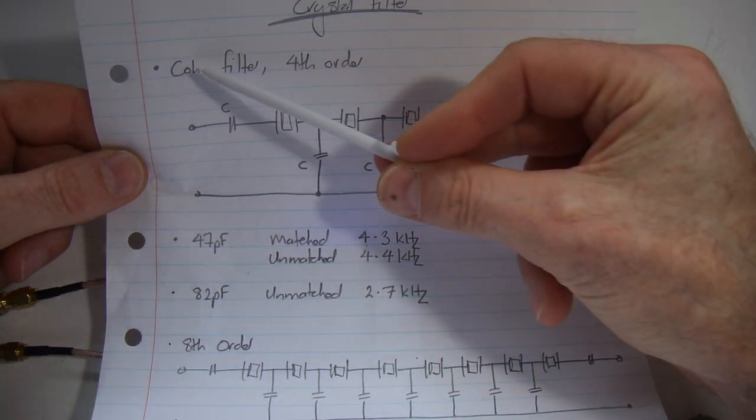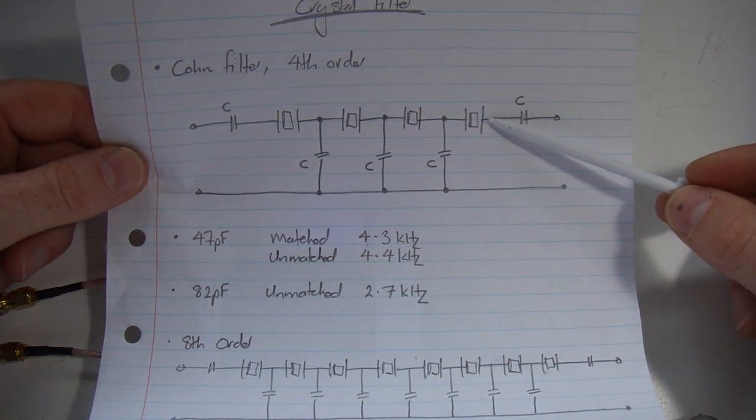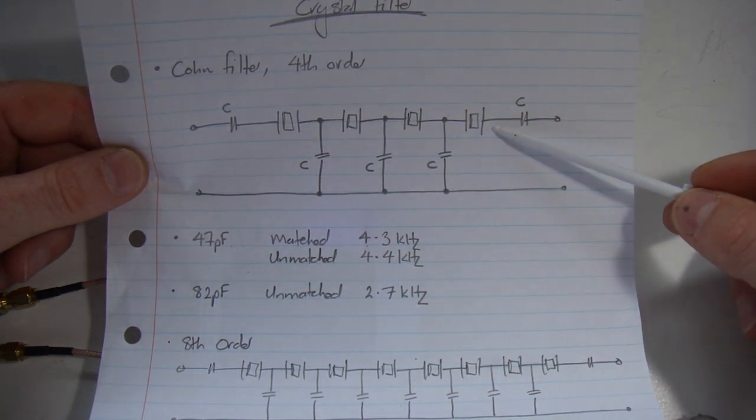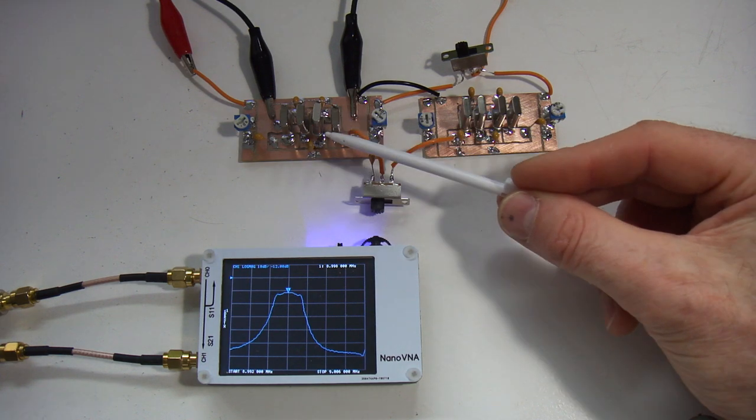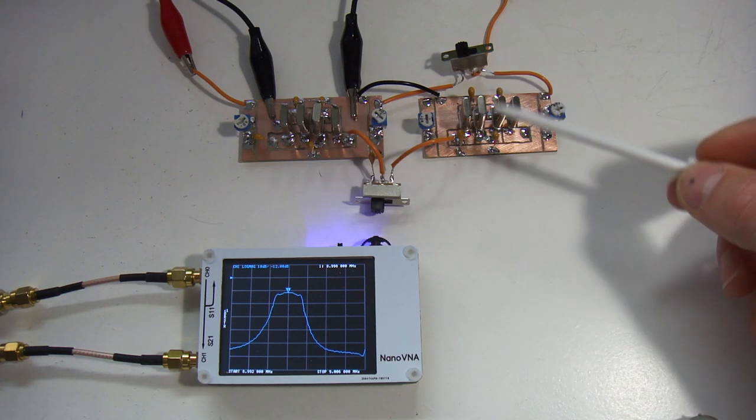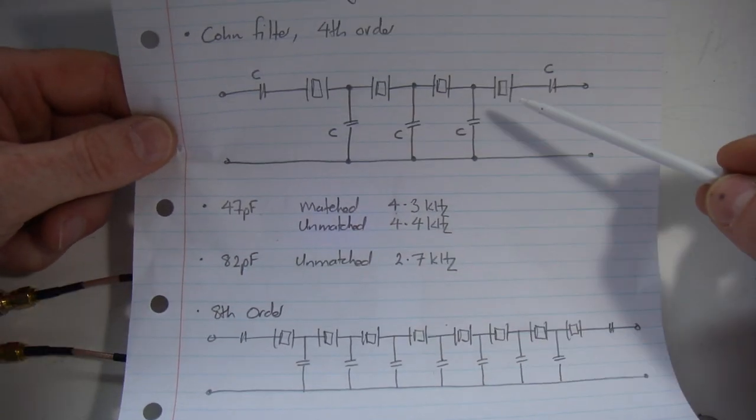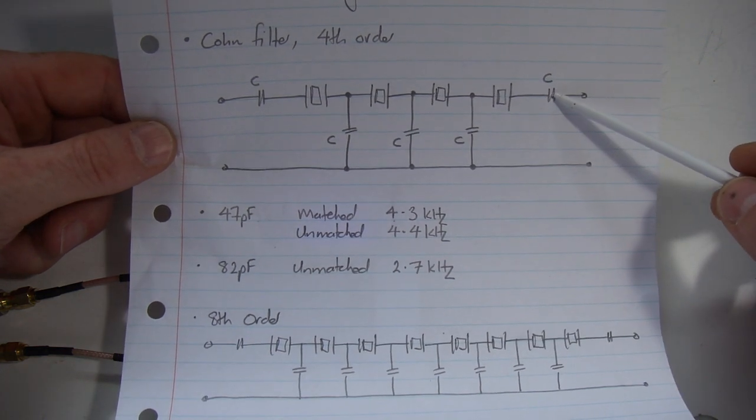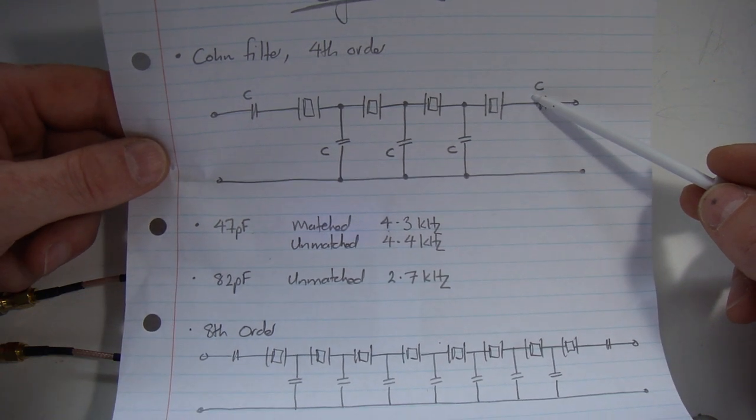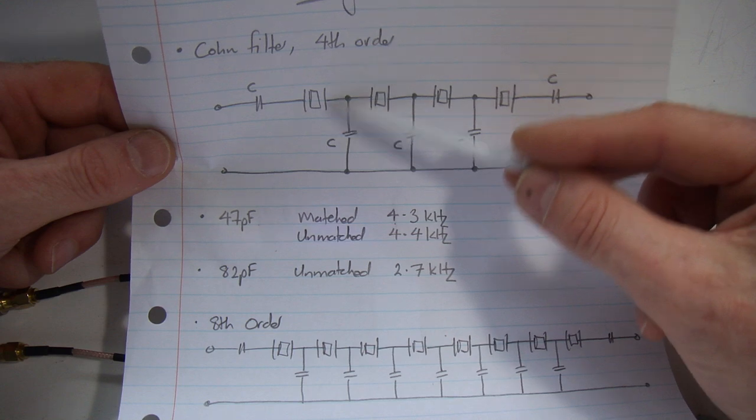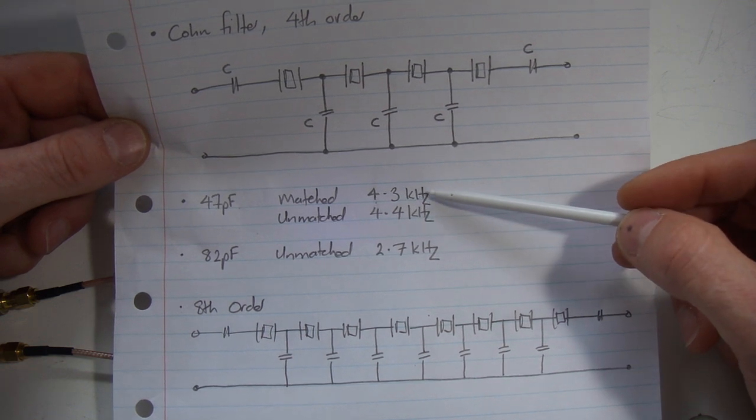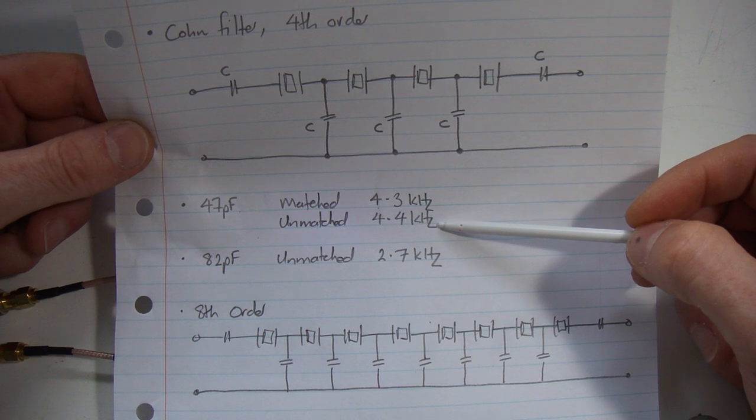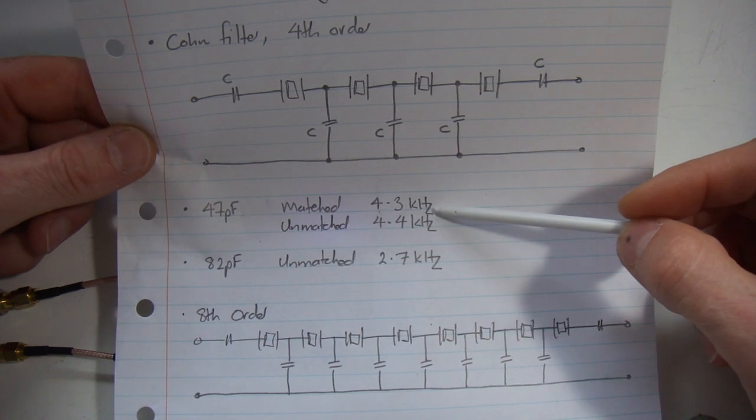I wanted to do a Cohn filter, which is a fourth order filter with four crystals where all the capacitors are the same value. I made up two filters this morning, one using matched crystals and one with unmatched. I knew the capacitance would be under 100-odd picofarads, so I selected 47 picofarads. I used the VNA to scope their response and ended up with 4.3kHz bandwidth for the matched set and 4.4kHz for the unmatched set.